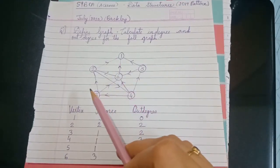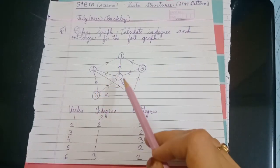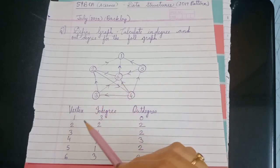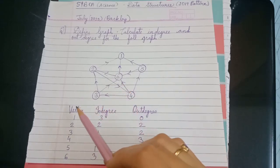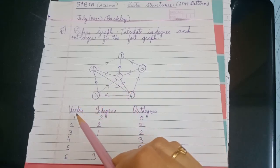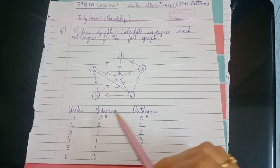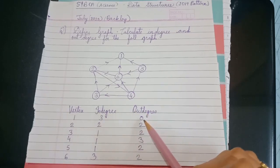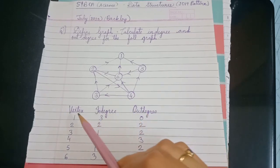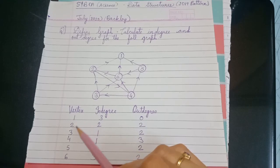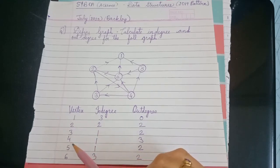In the graph there are total six vertices, so we will make three columns. The first column is vertex, the second is in-degree, and the third is out-degree. In the vertex column we will write down all the vertices: one, two, three, four, five, and six.